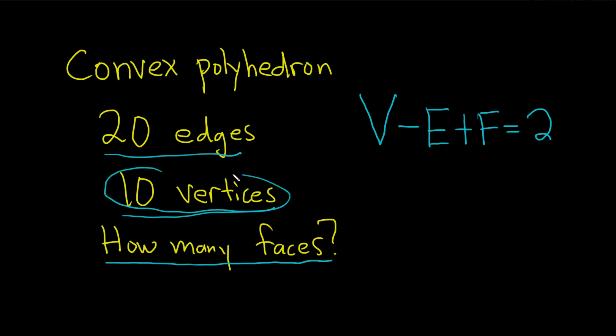V is 10 because we have 10 vertices, so I'm going to put 10 here, and then minus 20 edges, so E is 20, and then F. F is the faces, so that's going to stay there, so plus F, and that's equal to 2.